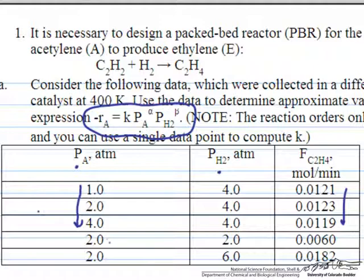Conversely, if we keep the amount of A fixed and vary the amount of hydrogen using these three data points, we see that doubling the amount of hydrogen doubles the rate, and tripling it from the original case also triples the rate.